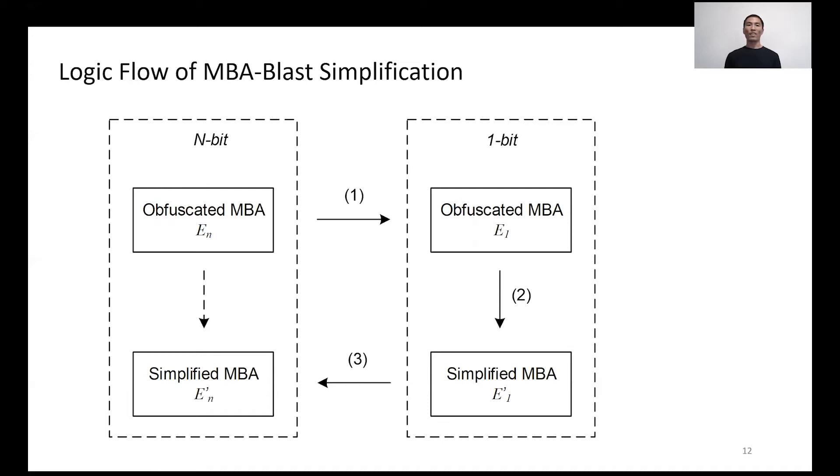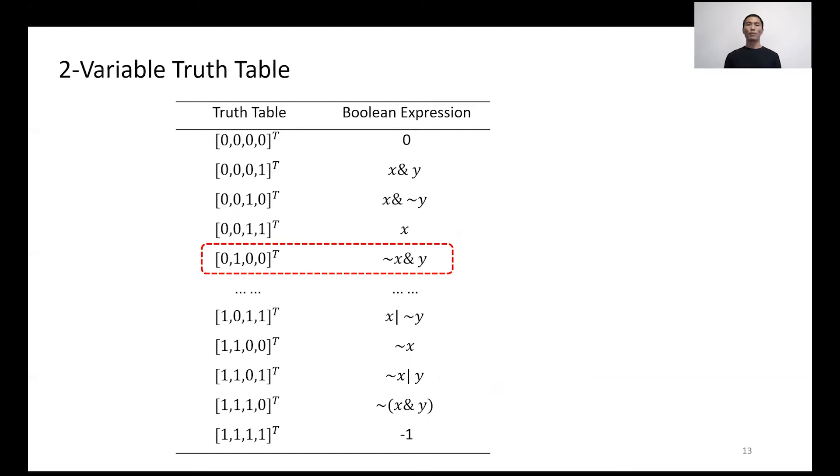Steps one and three have been proven. Therefore, the simplification problem boils down to step two: finding a simple MBA form E prime sub 1 that equals E sub 1. For one-bit space, one can use truth tables to enumerate all possible values.